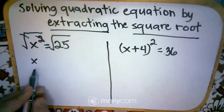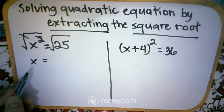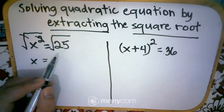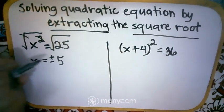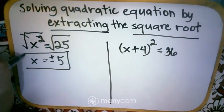The variable is already alone, but still we need to simplify the right side. So square root of 25 is positive negative 5. So as simple as that, we have already the answer.